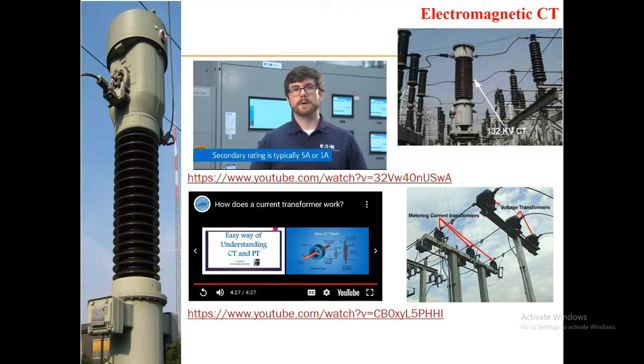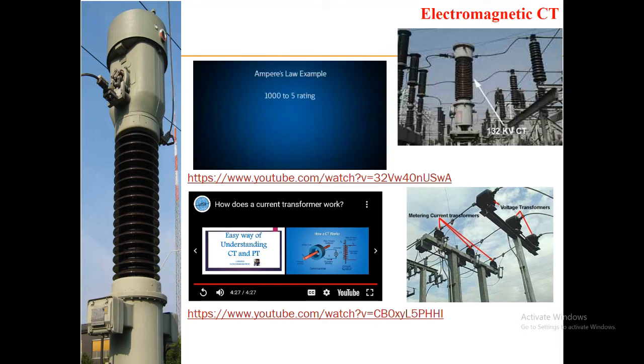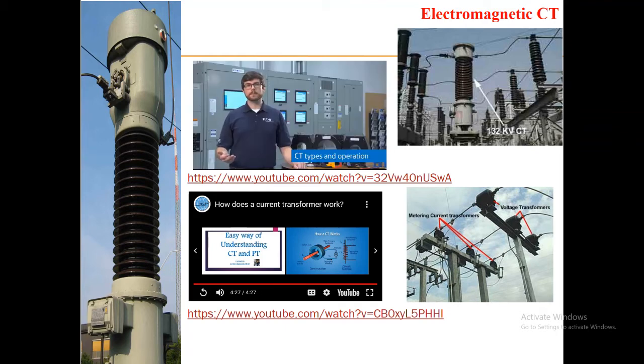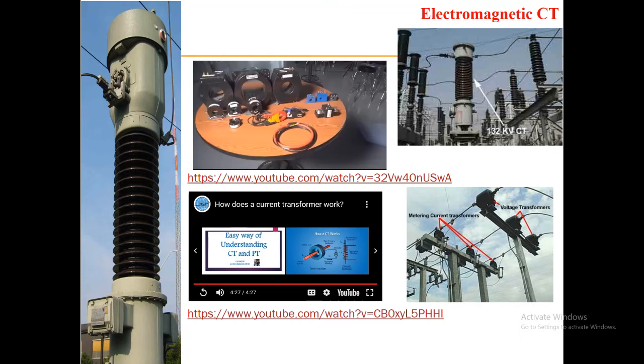The current on the secondary winding is proportional to the current flowing through the center of the core. Typically, the secondary rating is 5 amps or 1 amp. For example, with a 1000 to 5 rating or a turns ratio of 200 to 1, when 1000 amps flows on the primary circuit, 5 amps would flow on the secondary winding.